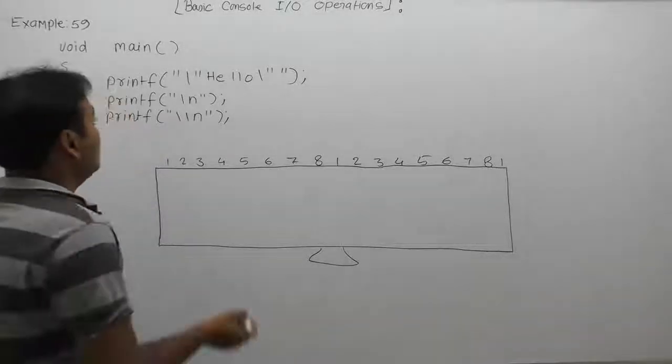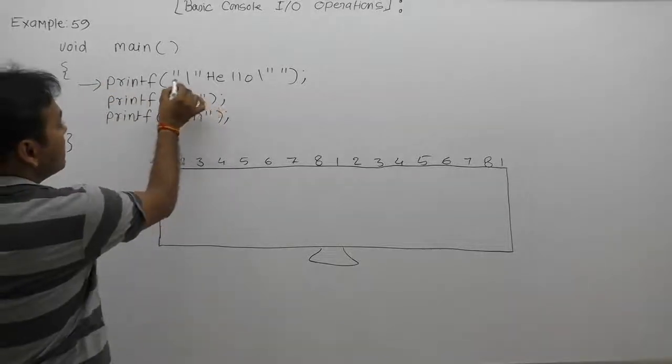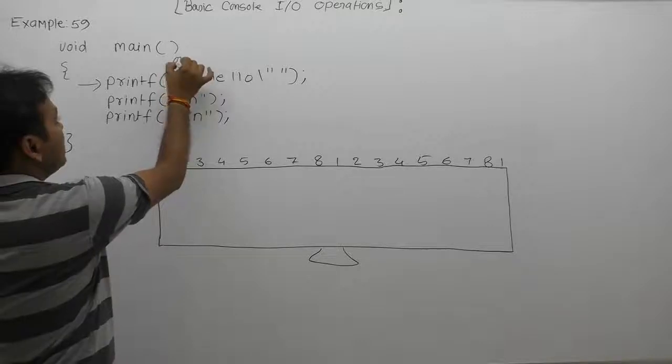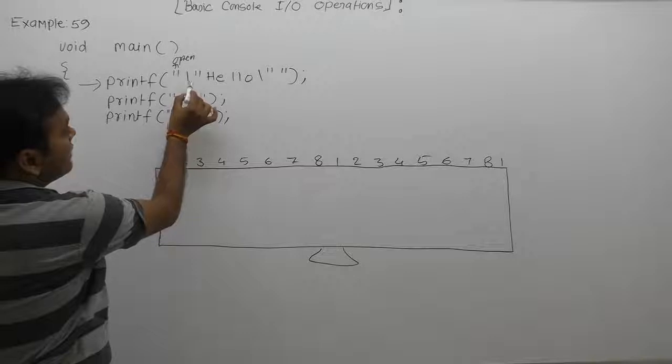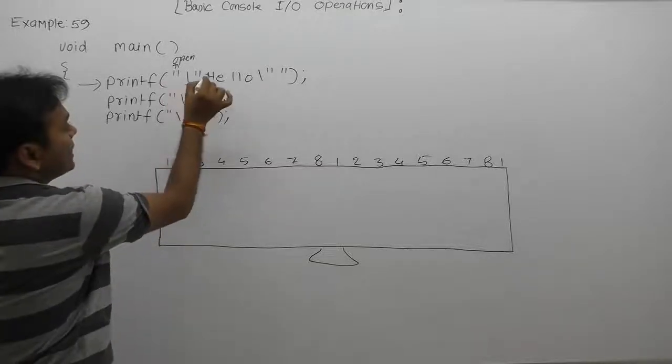Again, next example. According to first print tab, it will print first of all this is the opening of the string. It will represent opening of the strings. Next one, slash slash will be used to, as you know, slash is an escape sequence character.